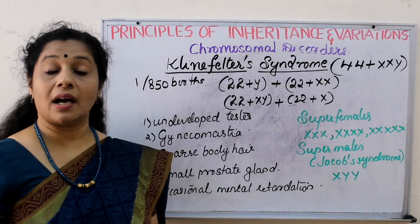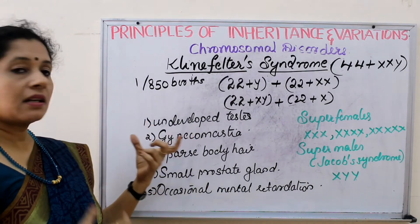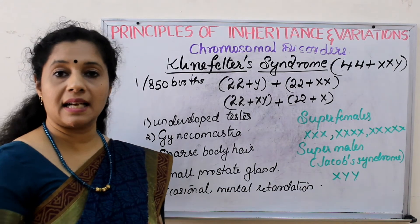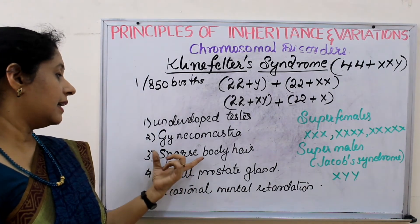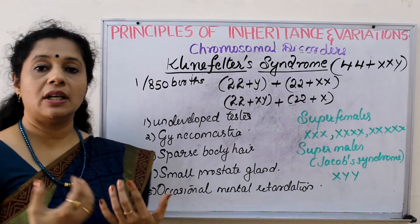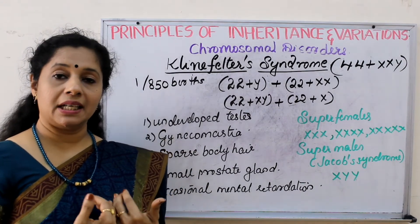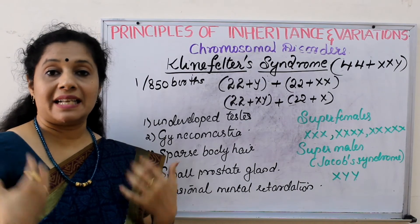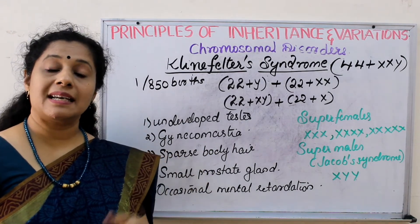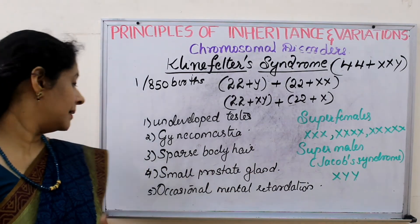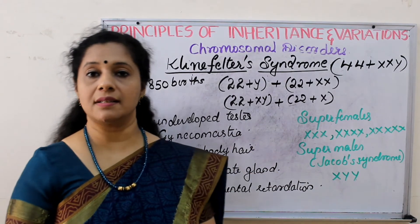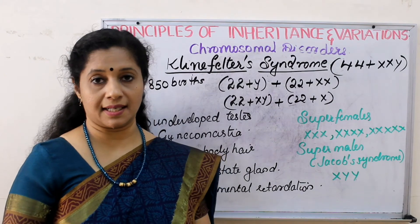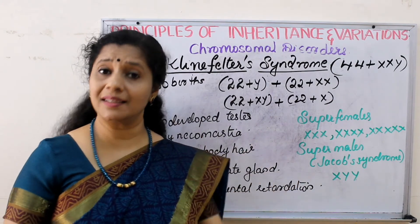The characteristics of Klinefelter syndrome include rudimentary or undeveloped testes and small external genitalia. They also have a small prostate gland — the accessory gland in males. Then they have sparse body hair. Usually masculinity means more body hair, but here femininity is more because of the excess X chromosome. So they have less hair but show gynecomastia — breast development which is characteristic of females. Occasional mental retardation is also found. Apart from these, there are super females, super males, and many other conditions, but these are the main ones to study in your NCERT textbook.